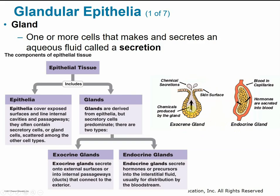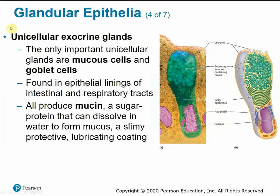Exocrine glands have ducts or little channels that carry secretions to the skin surface. Endocrine glands do not have ducts because they're surrounded by capillaries and secrete directly into the bloodstream. Unicellular exocrine glands are called goblet cells or mucus cells, found in the epithelial linings of the intestinal and respiratory tracts. They produce mucin, the precursor to mucus — that slimy, protective, lubricating coating.